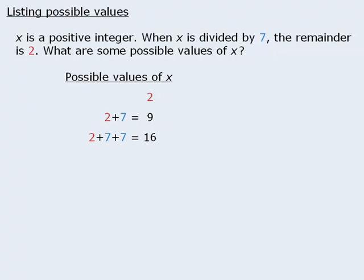So to find other possible values of x, we'll keep adding 7 to the previous value. And so on.